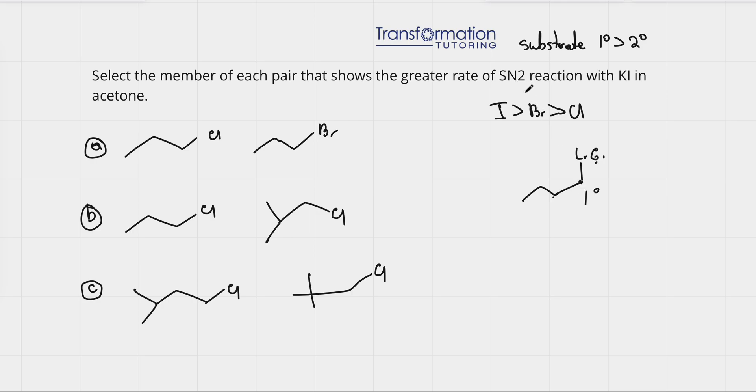The reason SN2 prefers primary substrate is because the nucleophile, in this case KI, K is positive, I is negative, iodine minus will attack from the back. In SN2, the nucleophile attacks from the back, and if there are too many groups in the back, it will not be able to get through to that carbon.